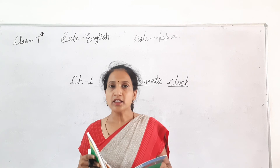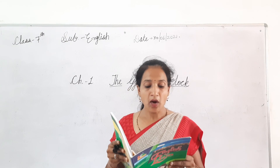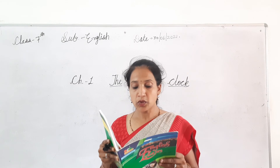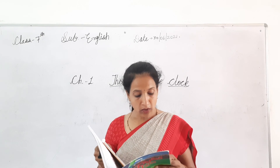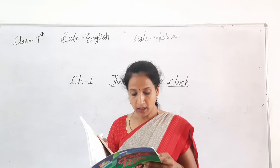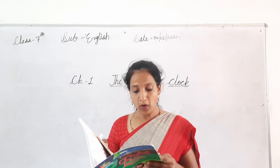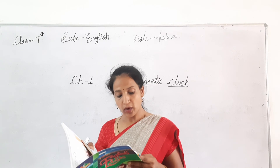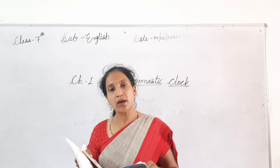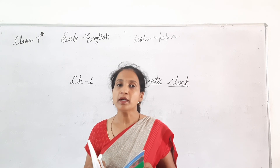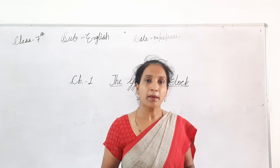Question number four: how does the clock compare its movement to physical exercise? The answer will be: the poet and the clock both raise their hands above, lower their heads, and swing their arms round. This will be the answer to question number four.